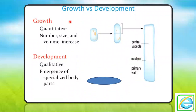When looking at growth versus development, we observe that growth is a quantitative phenomenon in which the number, size, and volume increase. Development is a qualitative phenomenon in which there is the emergence of a specialized body part for a specialized function. When a cell divides and redivides, the number and size increase — but after maturation, cells perform specific functions, which we call development.